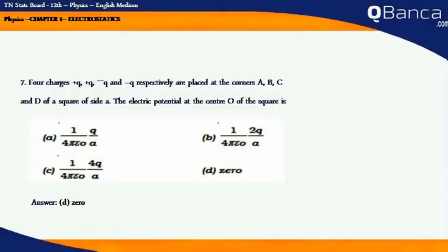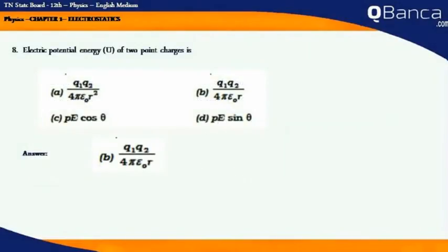Four charges +q, +q, -q and -q respectively are placed at the corners A, B, C and D of a square of side a. The electric potential at the center O of the square is. Answer: 0.